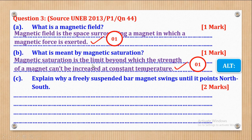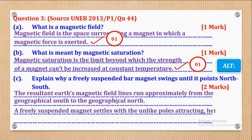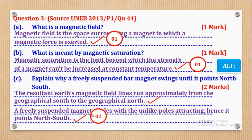Part C says: explain why a freely suspended bar magnet swings until it points north-south. The resultant earth's magnetic field lines run approximately from the geographical south to the geographical north. Therefore a freely suspended magnet settles with the unlike poles attracting, hence it points north-south. The first paragraph earns one mark and the second earns another — that's how the two marks are got.